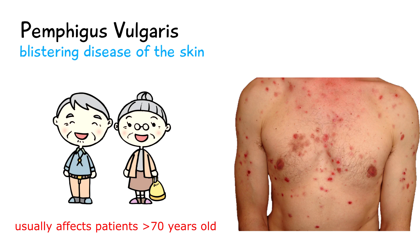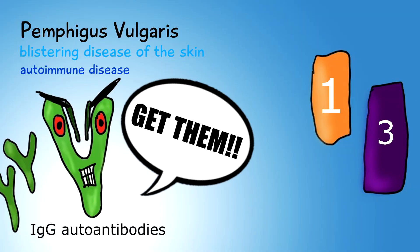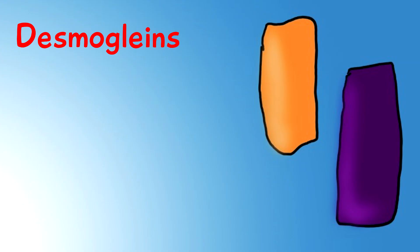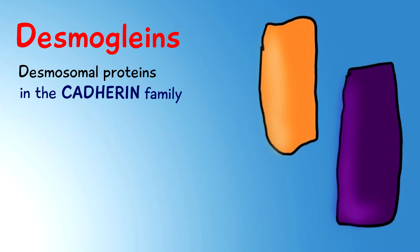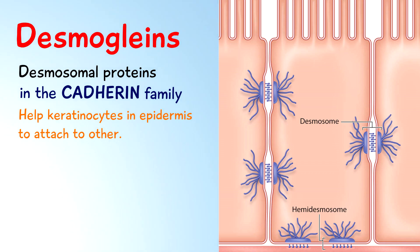Pemphigus vulgaris is considered to be an autoimmune blistering disease and it's noted that there are IgG autoantibodies directed against Desmoglein 3 and 1. Desmogleins are desmosomal proteins and they are in the cadherin family. These proteins help keratinocytes in the epidermis attach to each other.